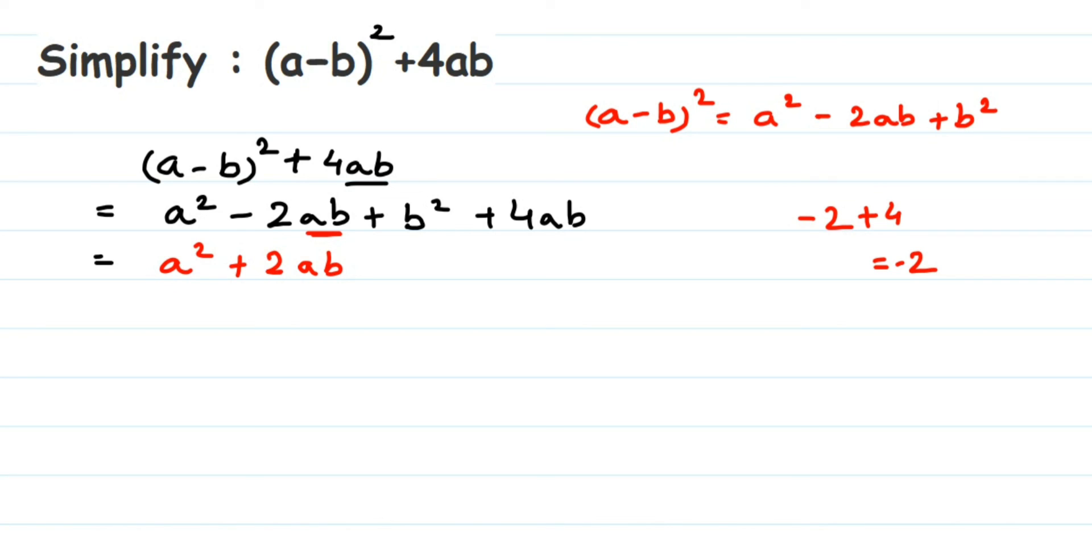Then we have b². We don't have any other term with b², so we're going to write down b². And that's it. This is the answer: a² + 2ab + b² is the answer.